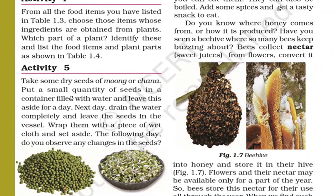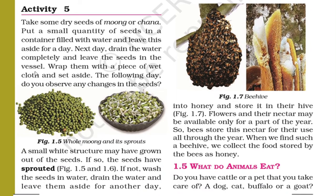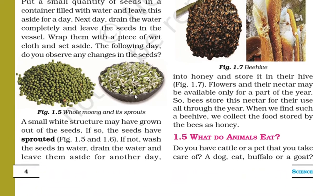Activity 5: Take some dry seeds of moong or chana. Put a small quantity of seeds in a container filled with water and leave this aside for a day. Next day, drain the water completely and leave the seeds in the vessel. Then wrap them with a piece of wet cloth and set aside. The following day, observe any changes in the seeds. A small white structure may have grown out — if so, the seeds have sprouted. You can see the whole moong and the sprouted one here.